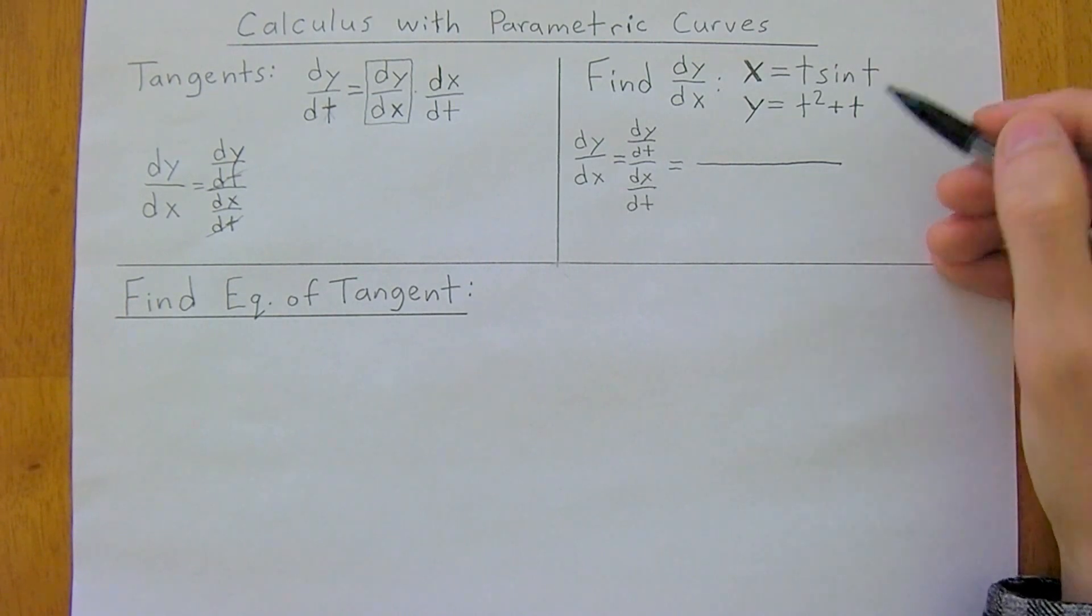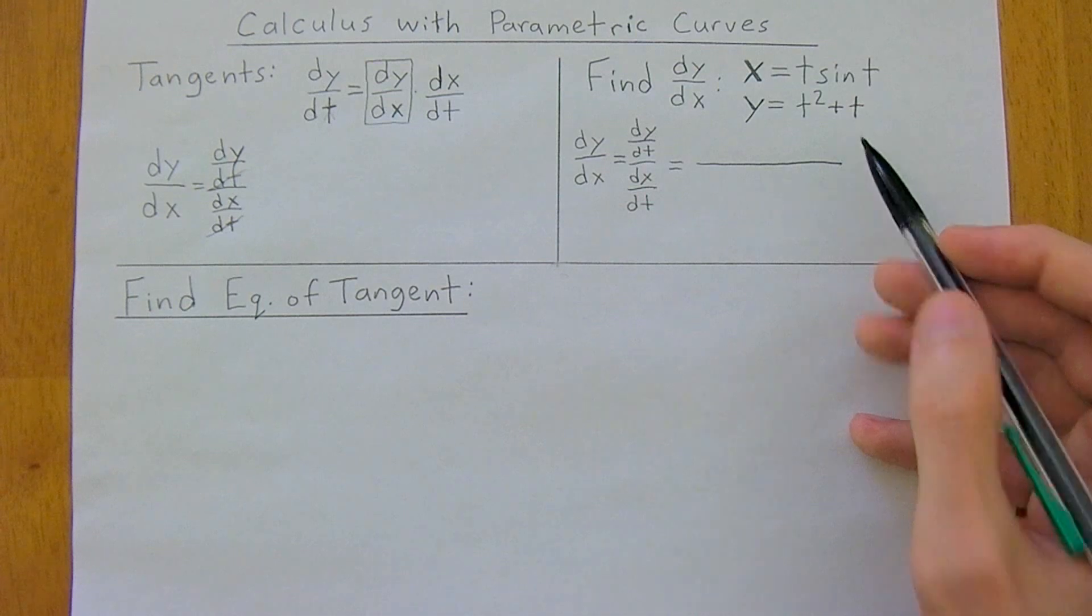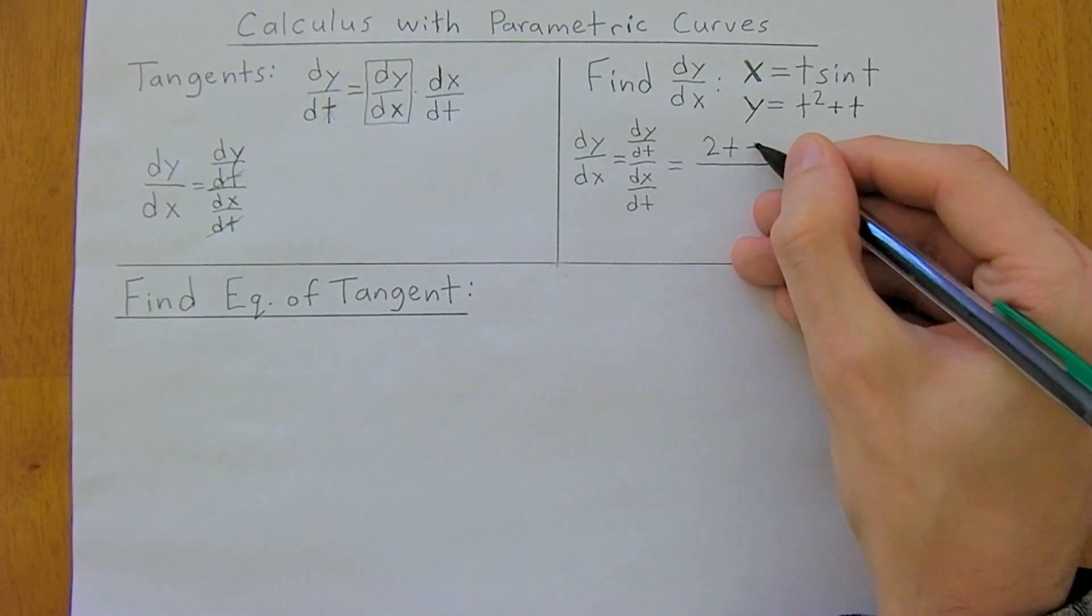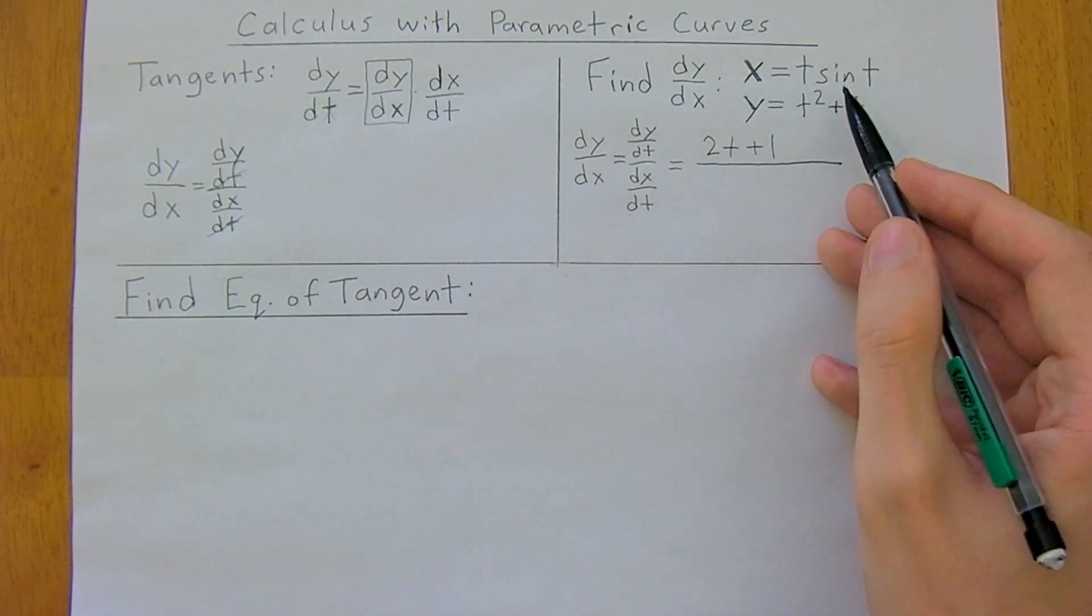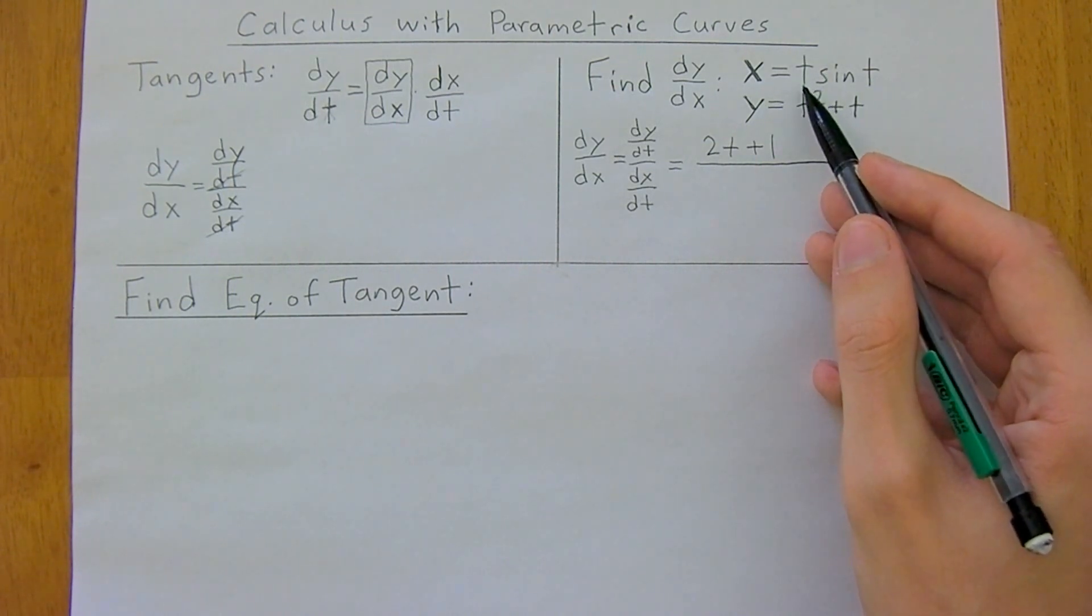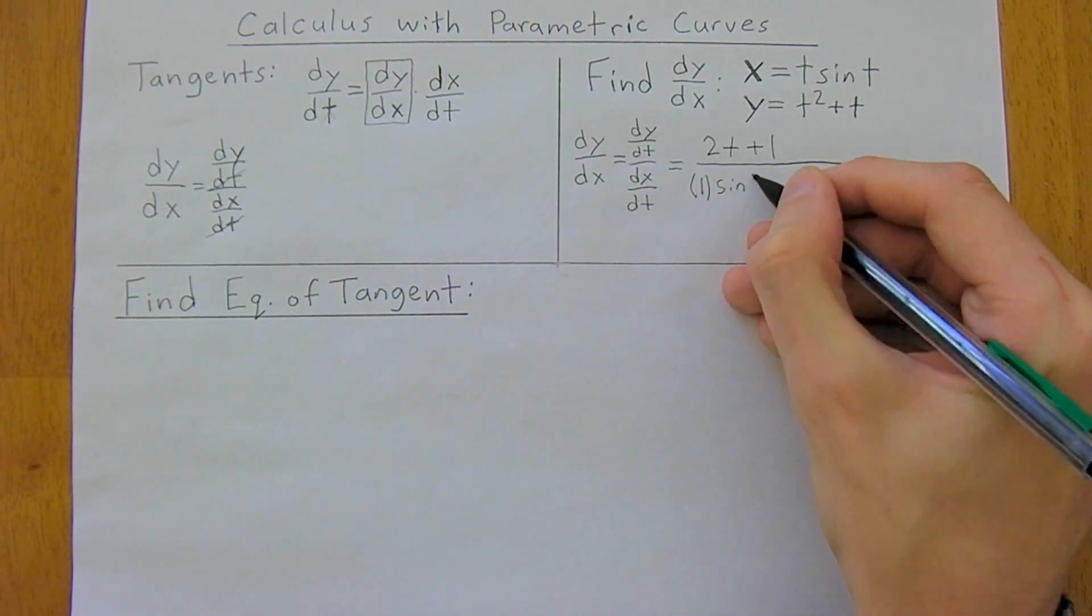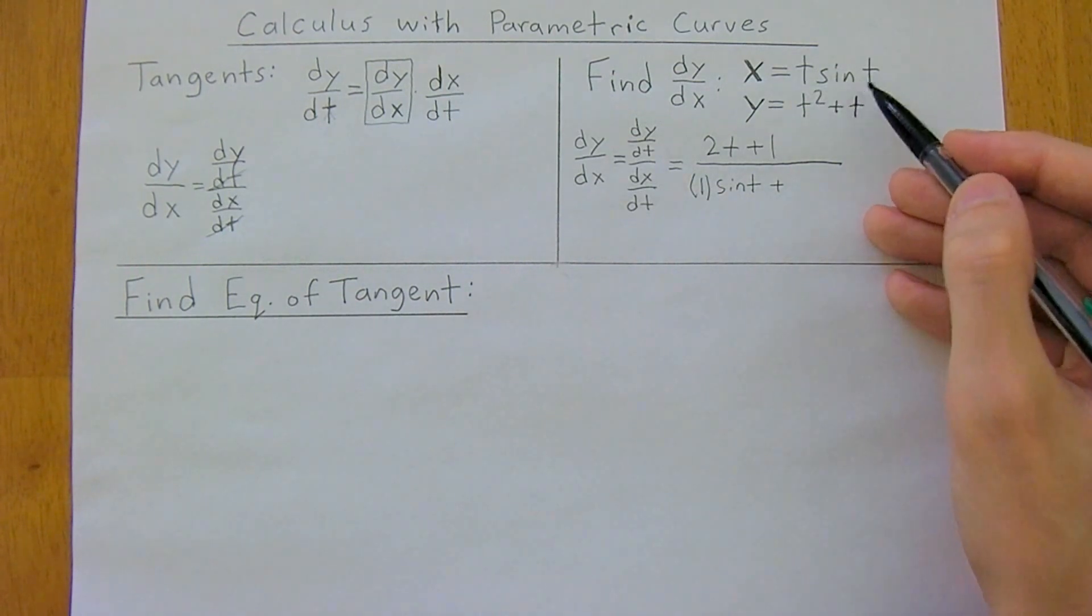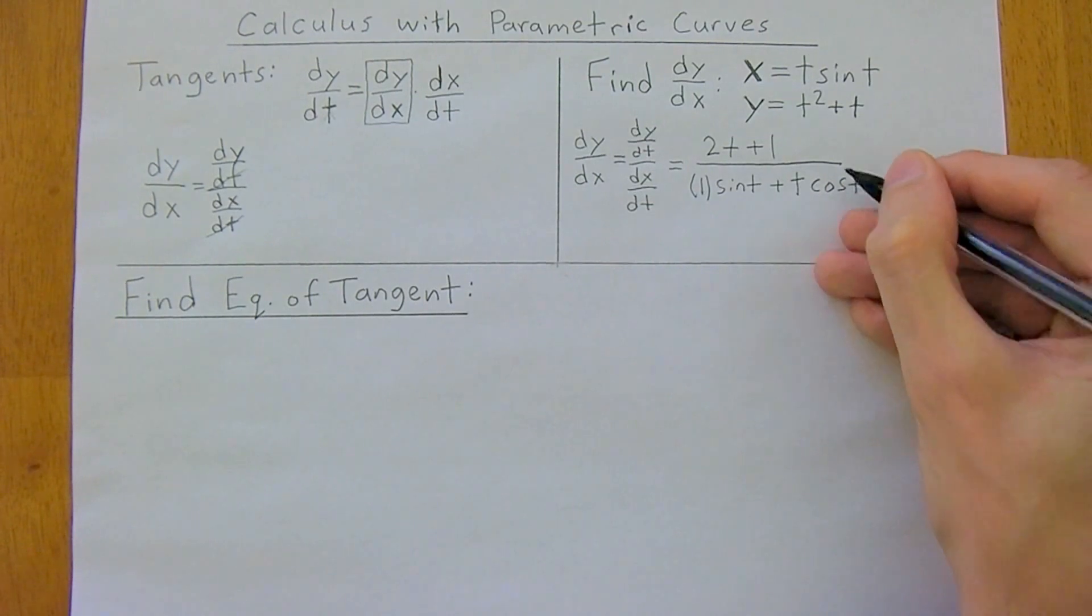It's not that much different than what you're used to. So the derivative of y with respect to t is going to be 2t plus 1. And the derivative of x with respect to t is going to be the derivative of the first term times the second term. So 1 times sine t plus the first term times the derivative of the second term, so plus t cosine of t.